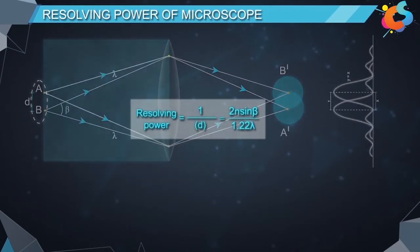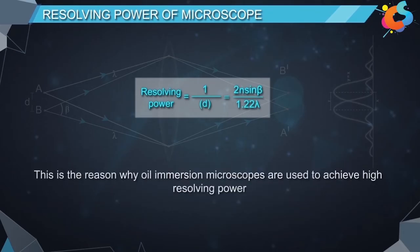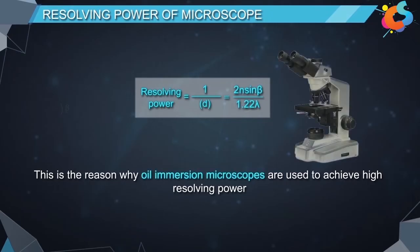Overall, we can say that the resolving power of the microscope increases with increase in the value of refractive index N. This is the reason why oil immersion microscopes are used to achieve high resolving power.